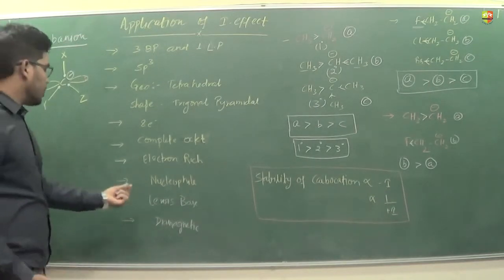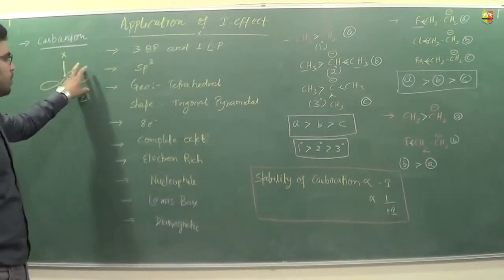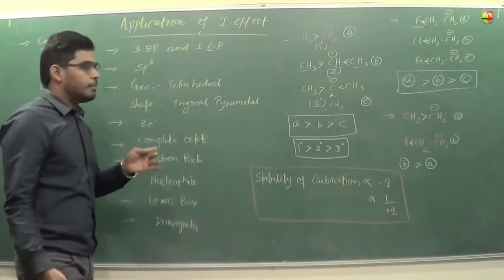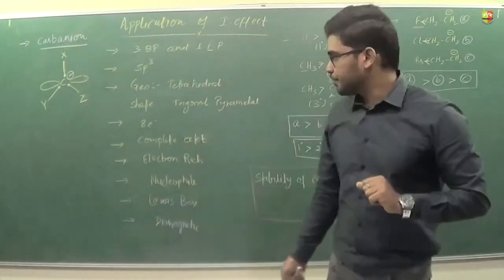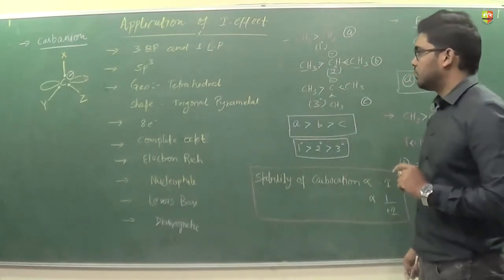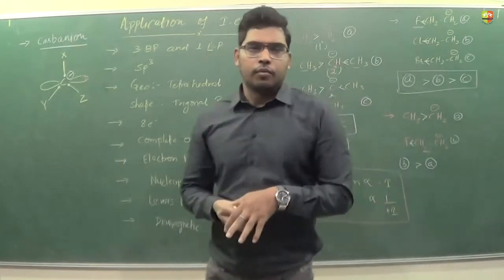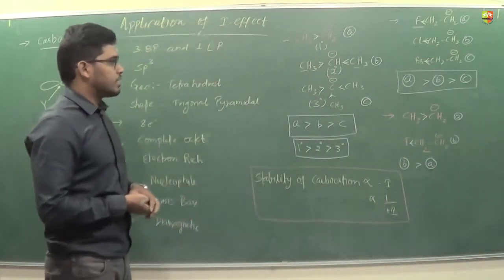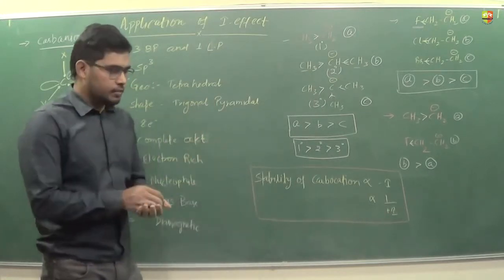The carbanion may behave as a Lewis base because there is a lone pair present on it — though these are not necessarily good Lewis bases, they may behave as one. Now we'll see some more examples and discuss them. I'll write down the examples, you solve on your own, and then we'll discuss.